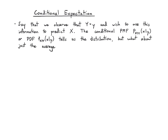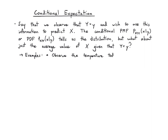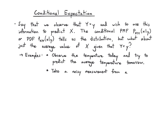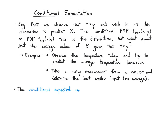But what about just the average value of X once we know Y? As an example, say you've observed the temperature today and you try to predict the average temperature tomorrow. Or you take a measurement from a reactor that you know to be noisy, and you try to determine what is the best control input on average. So the conditional expected value E of X given that Y equals little y is exactly that average given the value of Y.